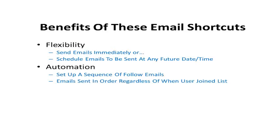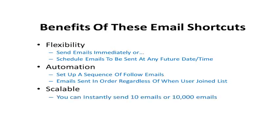When you create a sequence, it runs that sequence regardless of when the person entered your email list. If someone joins today and you have five emails scheduled over five days, they'll get those five emails. If they join tomorrow, it starts tomorrow. If they join two weeks from now, it starts two weeks from now. It's also scalable — you can send ten emails or ten thousand emails instantly.